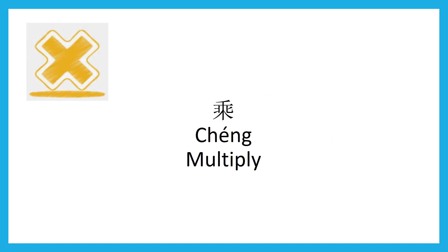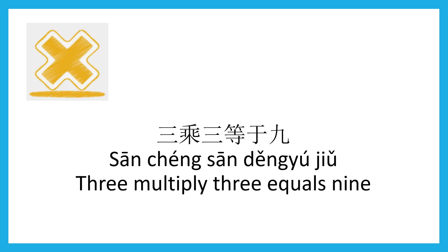Multiply — 乘 (chéng). 乘, 乘. 3 multiply 3 equals 9 — 三乘三 (sān chéng sān), 等于 (děngyú), 9.